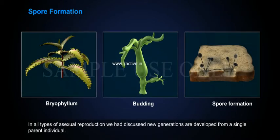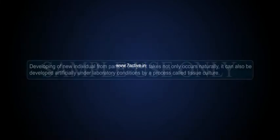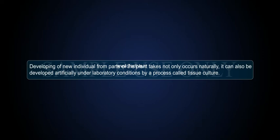In all types of asexual reproduction we have discussed, new generations are developed from a single parent individual. Developing a new individual from parts of a plant not only occurs naturally, it can also be developed artificially under laboratory conditions by a process called tissue culture.